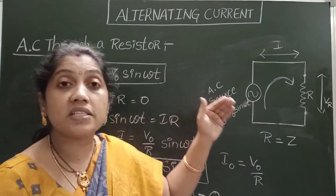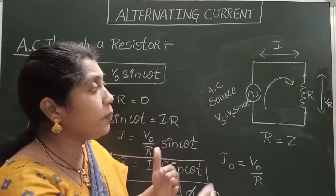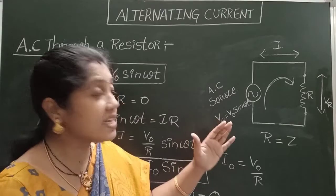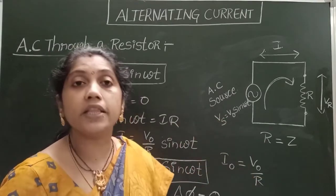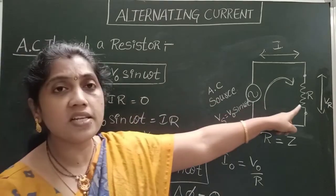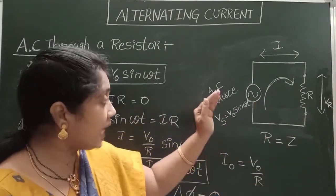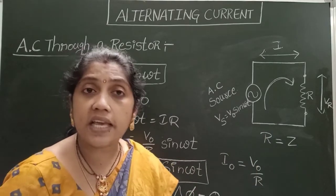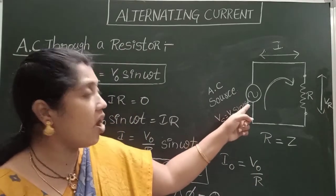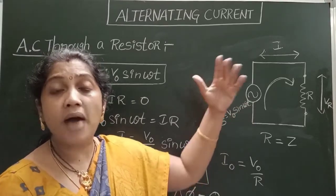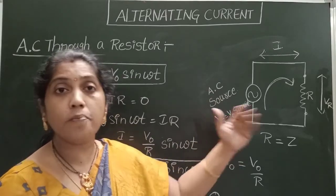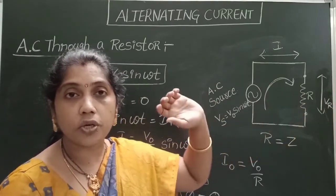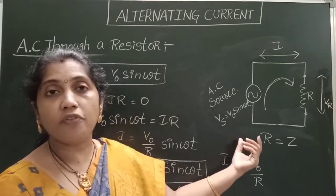Resistors are passive devices — they do not produce or consume electrical energy, but convert electrical energy into heat energy. Resistors also do not depend on the direction of current or the frequency of the source. In DC circuits the frequency is zero, and in AC circuits frequency is maximum, but even as frequency varies from zero to maximum there is no change in the resistance value.